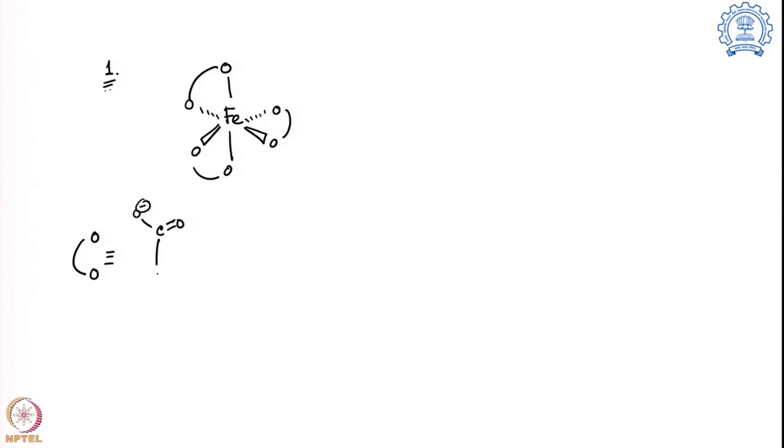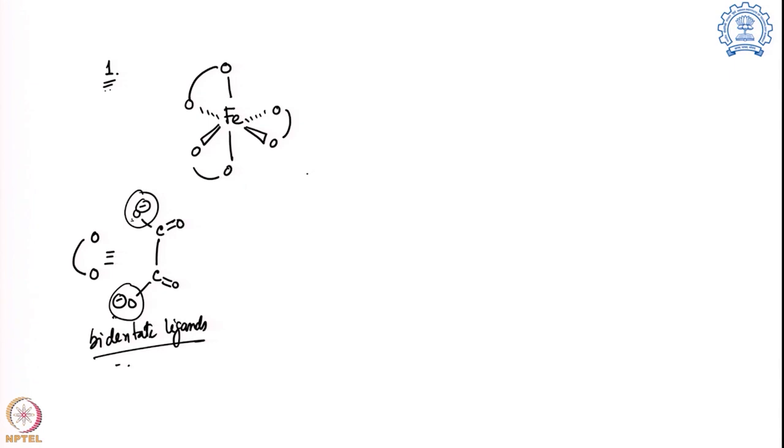The first example is an iron octahedral complex with bidentate ligands bound to it. Bidentate ligands here are carboxylate acid groups, where two centers bind to the metal from the same ligand — that is why they are called bidentate ligands. Iron is binding three such bidentate ligands, and the question is whether this molecule is chiral or not.